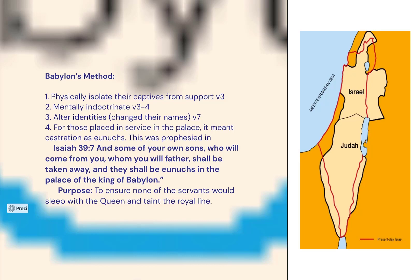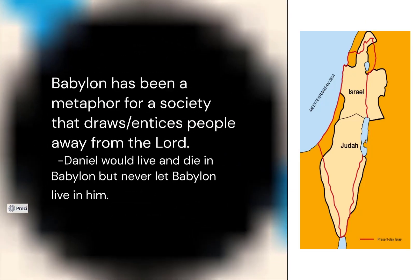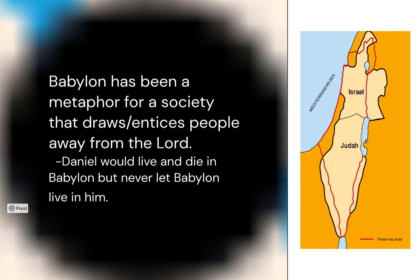What was the purpose? To ensure none of the servants would sleep with the queen and taint the royal line. Babylon has been a metaphor of a society that draws and entices people away from the Lord. Daniel would live and die in Babylon but never let Babylon live in him.